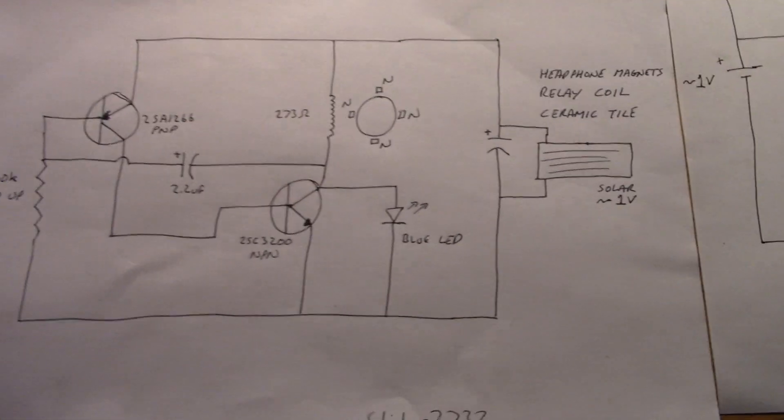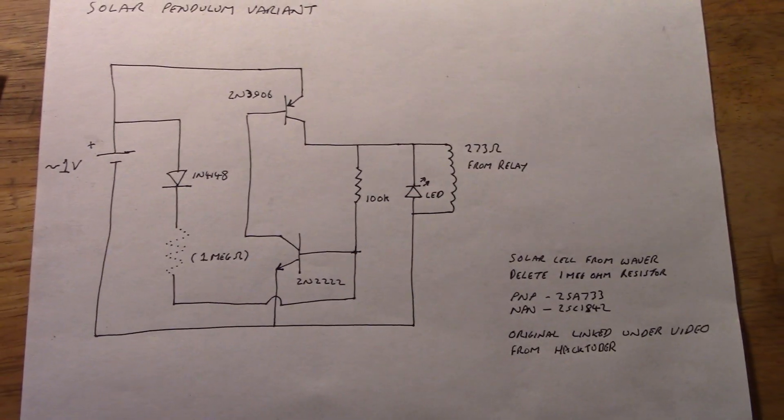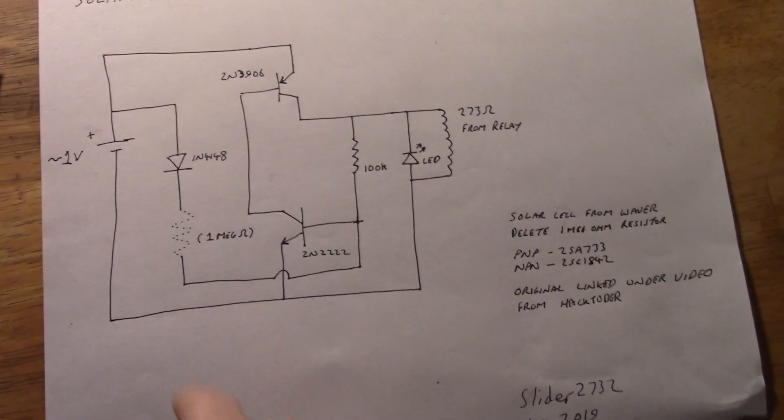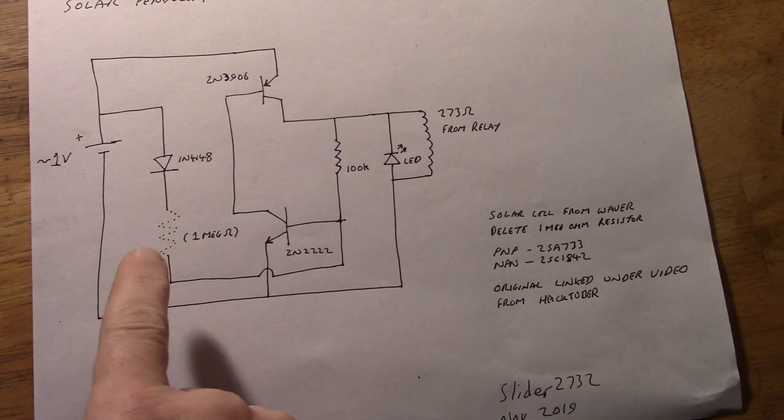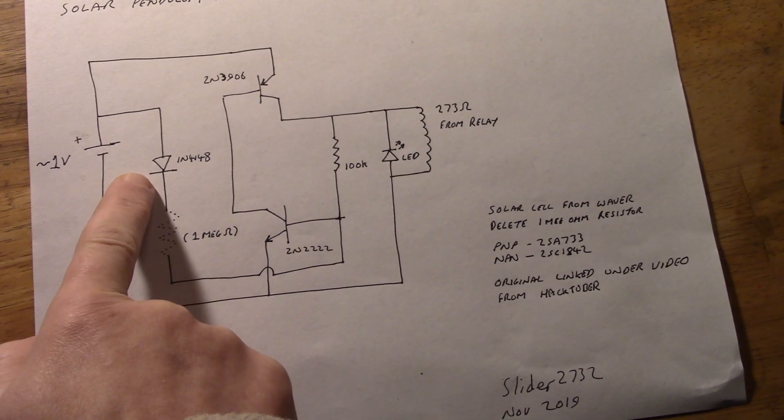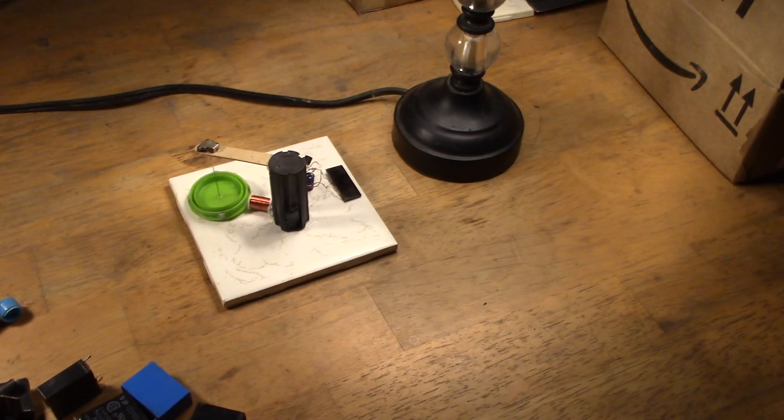This is the original one there that I was working from with Leadmotor's design and this one was from HackTuber. On his pendulum setup he has this circuit and it wouldn't work at first for me. I deleted the one mega ohm resistor, left the diode in place because the circuit wouldn't work without it and lo and behold it works absolutely fine.